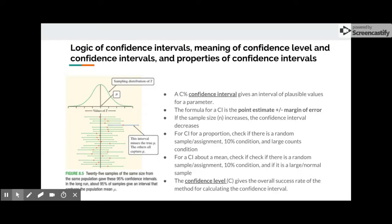For a confidence interval for a proportion, check if there is a random sample or random assignment, and if the 10% condition and large counts condition are met. For a confidence interval for a mean, check if there is also a random sample or random assignment, and if the 10% condition is met, and if it is a large or normal sample. The confidence level gives the overall success rate of the method for calculating the confidence interval.